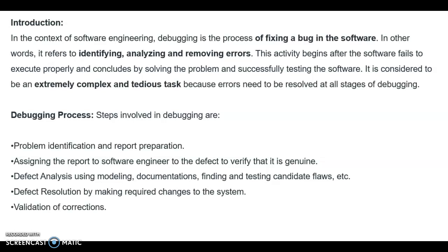The debugging process involves different steps. First, problem identification and report preparation. Then assigning the report to a software engineer to verify that the defect is genuine. This is followed by debugging and defect analysis using modeling, documentation, finding and testing candidate flows, and defect resolution by making the required changes to the system. Finally, validation of corrections.